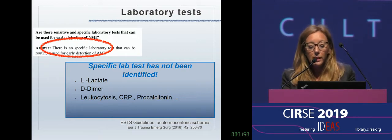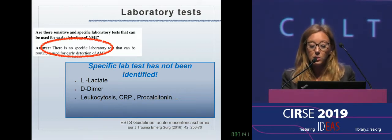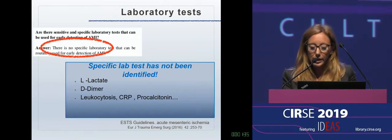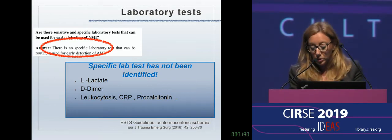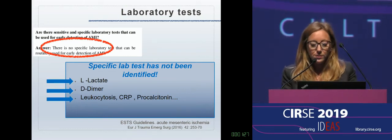D-dimer is not able to distinguish between patients with AMI and those with chronic disease. Other abnormalities we can find include leukocytosis, increased CRP, increased procalcitonin, increased amylase, LDH, and CPK. All of these are not sensitive and specific enough to be used early in the diagnosis of AMI.